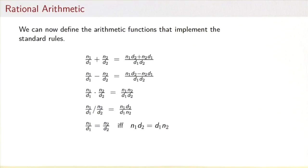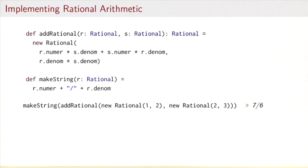So the next step is to do some arithmetic on rationals. We want to define the usual arithmetic functions: addition, subtraction, multiplication, division, using the standard rules. Now one thing we could do is we could use the class Rational as a pure data type, just as something that gives us the data, and define the operations as functions outside.